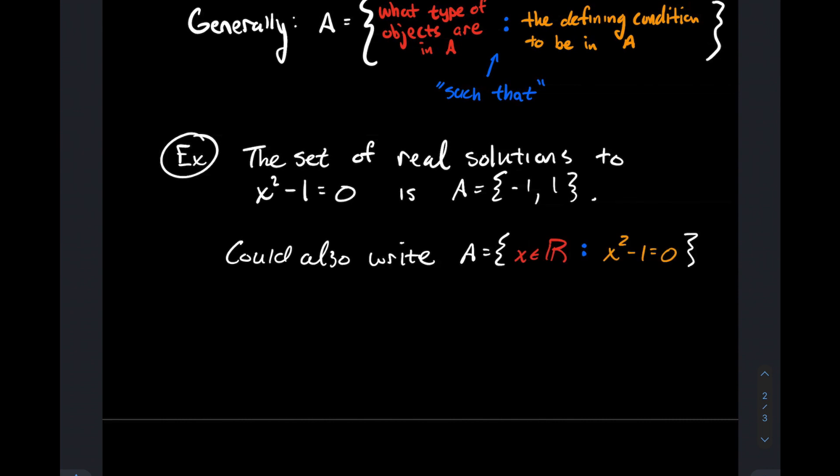For practice, how would I take this listing form, or roster method, when I'm just listing -1 and 1, and write that in set-builder notation? We could write A as the set of all real numbers—that bold R is typical notation for real numbers—so all real numbers x, the blue is 'such that,' and the orange is the condition that x has to satisfy: x² - 1 = 0. That's another way to describe the set of real solutions.